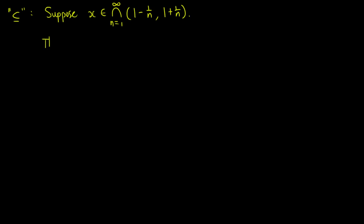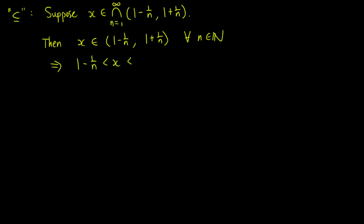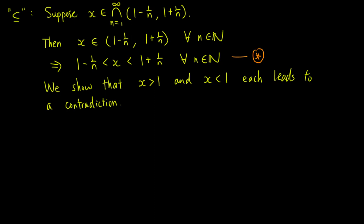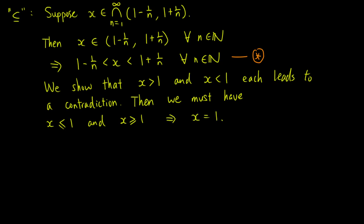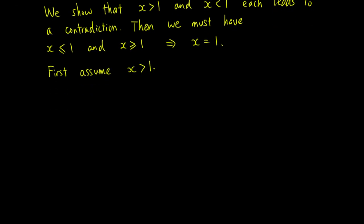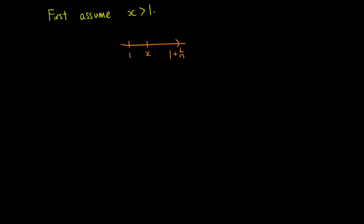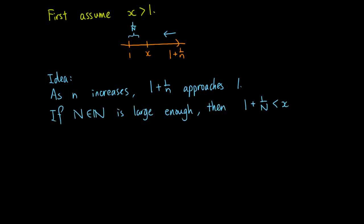Conversely, suppose x is an element of the infinite intersection. Then x is in the interval (1 - 1/n, 1 + 1/n) for all positive integers n. So 1 - 1/n is less than x is less than 1 + 1/n for all positive integers n — label this as star. We need to show that x equals 1. We are going to show that assuming x greater than 1, and x less than 1, each leads to a contradiction. First, we assume that x is greater than 1. We know that x is less than 1 + 1/n for all positive integers n. Observe that as n increases, 1 + 1/n gets closer and closer to 1. So when N is large enough, 1 + 1/N becomes less than x, which is a contradiction to star.